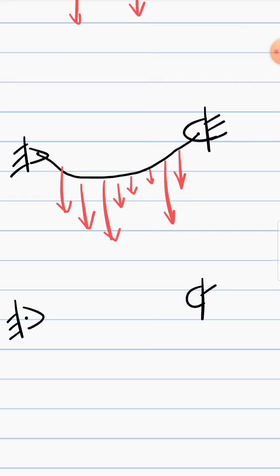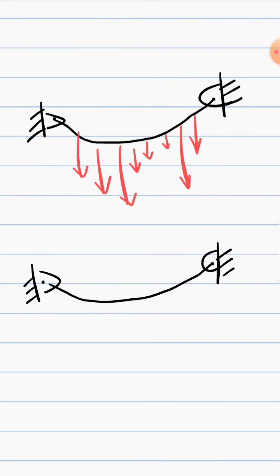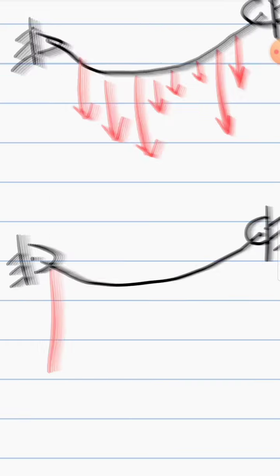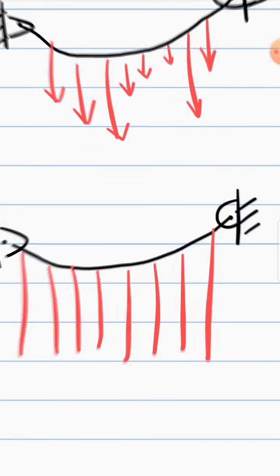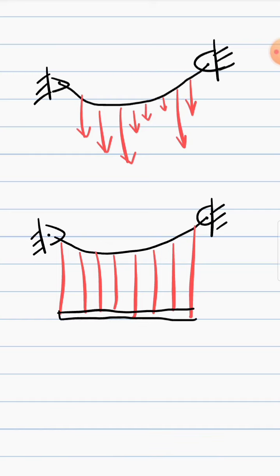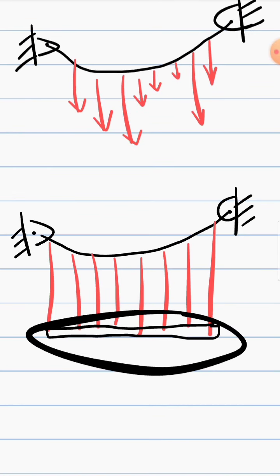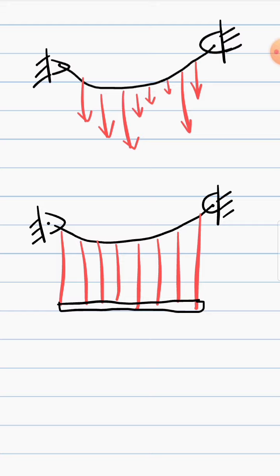The next case is if we have a cable that supports a load that is still distributed and also uniform - so it supports uniformly distributed load. We can assume this as bridge deck. We say that this has a uniform weight and this cable carries this uniform weight.